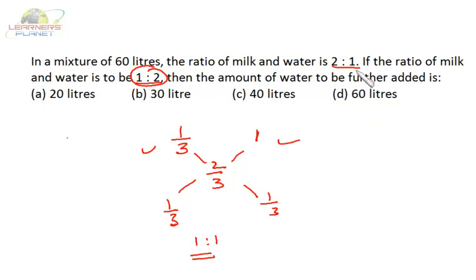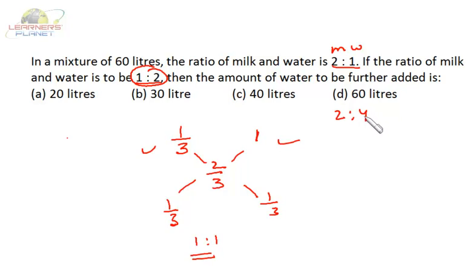Alternatively, you can solve this by ratio and proportion. The existing milk-to-water ratio is 2 is to 1, and the desired ratio is 1 is to 2, which is equivalent to 2 is to 4. Milk stays at 2 parts, but water must increase by 3 parts. Existing total is 3 parts (2+1) which equals 60 liters. So 3 parts = 60 liters, meaning we need to add 60 liters of water. Two techniques give the same answer — no extra paperwork needed.